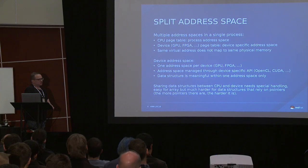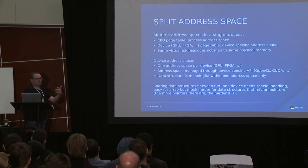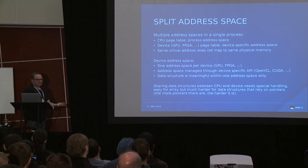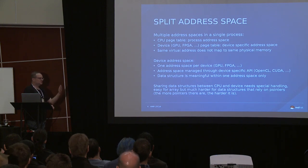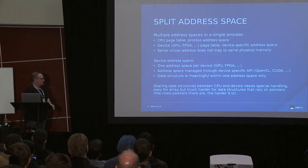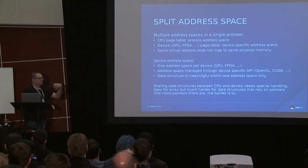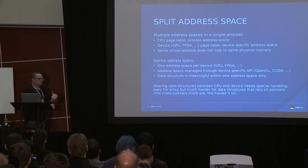Nowadays with compute becoming a big thing, you can see the GPU physical address space trickling down into programming applications like OpenCL or CUDA, where you actually expose the address space to the application itself, so the application becomes aware that it has a GPU address space, a CPU address space, an FPGA address space, and so on. That means data structures you create are only meaningful in one of those address spaces. If you create a data structure on your GPU, it can only be used by the GPU — you cannot use it on the CPU because the pointers are only meaningful for the address space in which they were created.